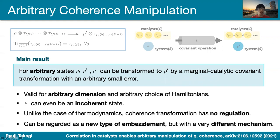Interestingly, the initial state ρ can even be an incoherent state — you can really create coherence out of it using marginal catalysts. And unlike the thermodynamics case, which is governed by free energy ordering, we don't have any such restrictions in the coherence transformation case. This really means that marginal catalytic transformations trivialize state transformations.